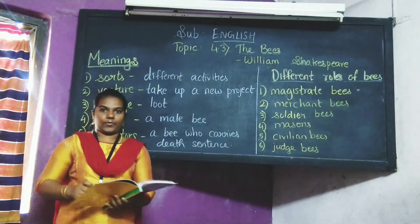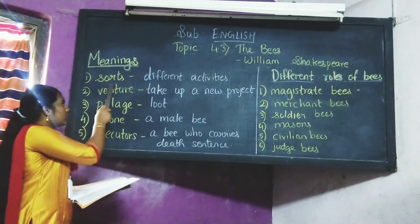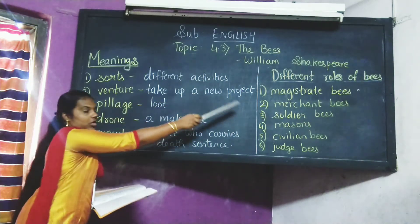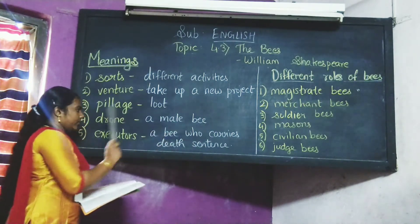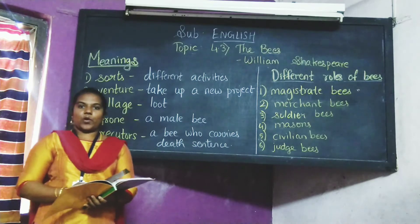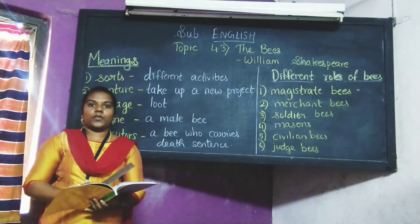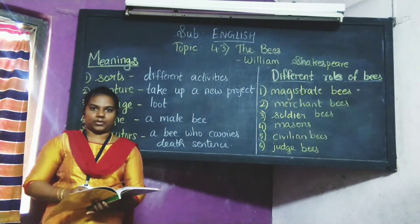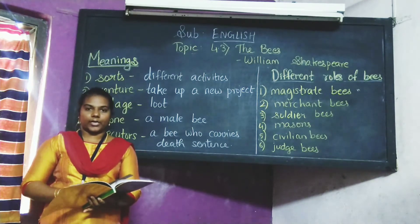Now students, we will see the hard words and their meanings. The hard words are: first, 'sorts' meaning different activities; second, 'venture' means to take up a new project; third, 'village' means loot; fourth, 'drone' means a male bee; fifth, 'executor' means a bee who carries the death sentence. In this poem, the poet also teaches us that we human beings think that insects' life is very easy, but it is not as simple as we think — the bees teach the order of life.